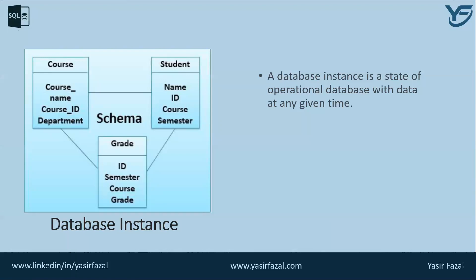For example, the course table contains course name, course ID, and department. The student table contains name, ID, course, and semester. And there is a grade table which contains ID, semester, course, and grade. So this is basically the schema of the database — it is defining the data structure of the database.